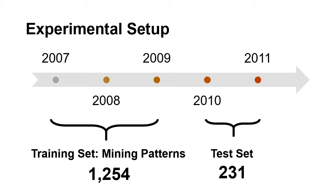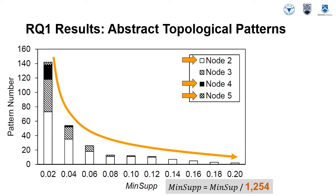The experimental method involves a training set and a test set. Given the sequential nature of our dataset, we use 1,254 code context models from the years 2007 to 2009 as the training set and 231 code context models from 2010 to 2011 as the test set. The figure summarizes the number of patterns mined from the training set with various numbers of nodes in the pattern. As the value of minimum support increases, the number of topological patterns decreases sharply from 142 to 2.